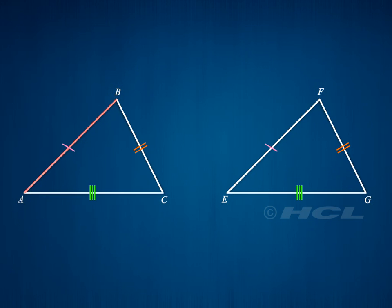And side AB is equal to side EF, side BC is equal to side FG, and side AC is equal to side EG.